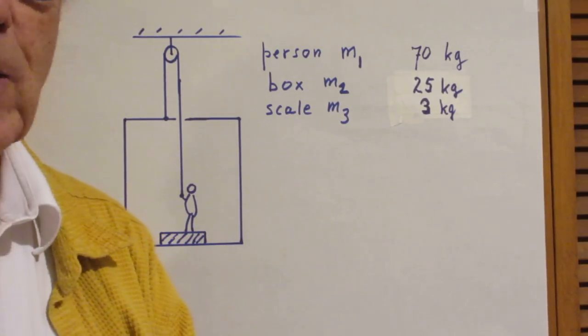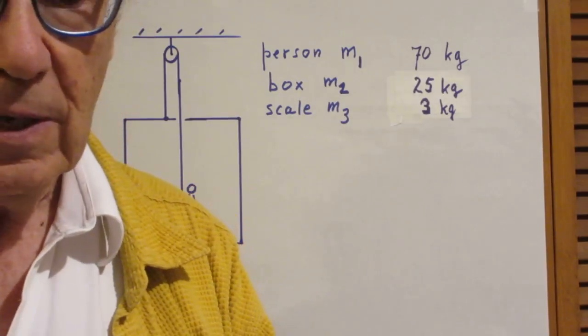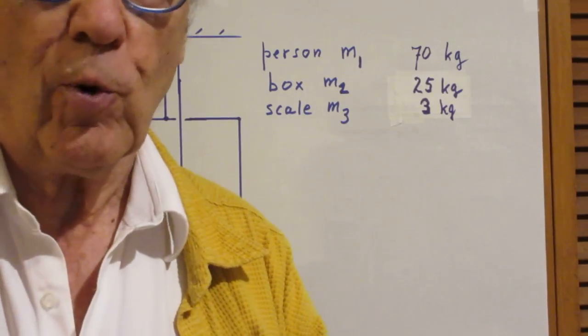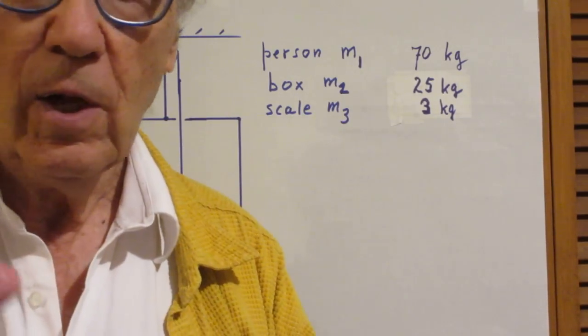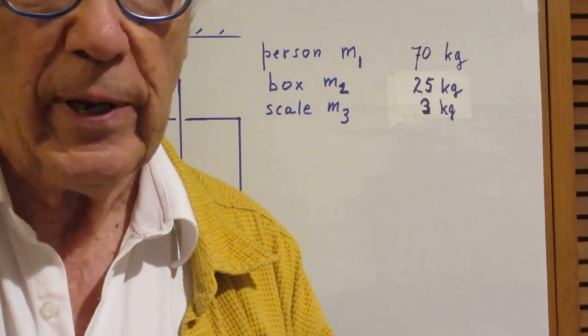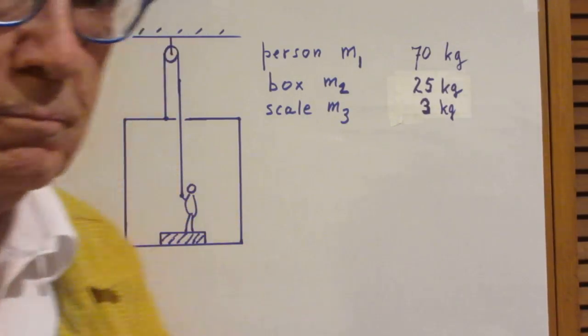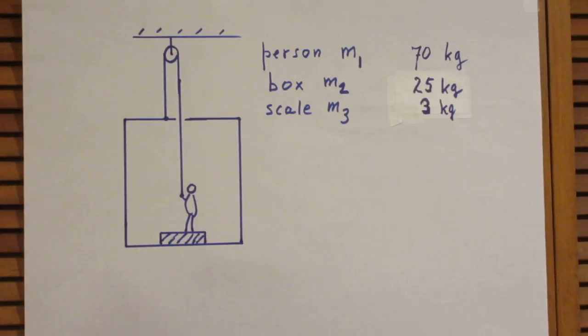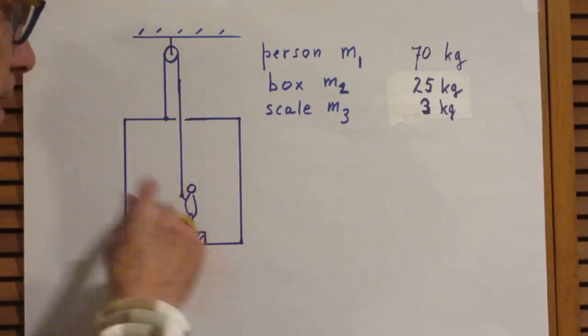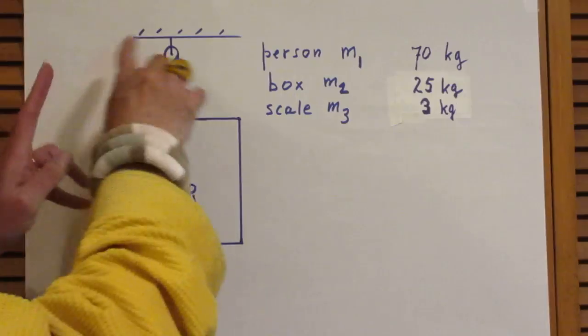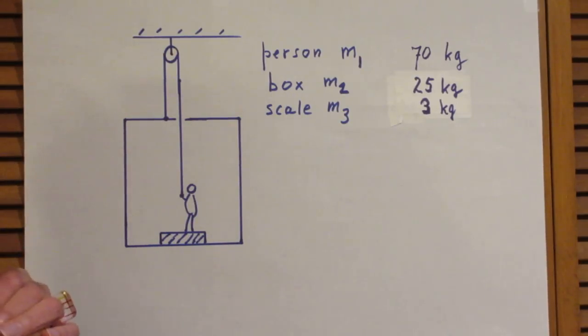is calibrated in terms of kilograms. So if you put a one-kilogram rock on that scale, the scale would read one. So the question now is, what will the scale read in that situation that nothing is moving? And so your answer should only be in terms of M1 and M2 and M3, nothing else.